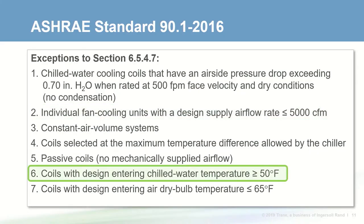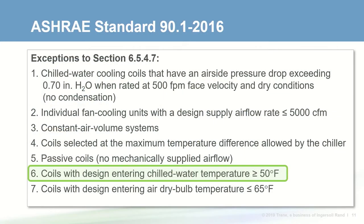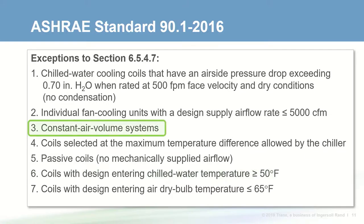Also, coils selected with an entering chilled water temperature of 50 degrees or warmer are exempt — this covers sensible-only cooling equipment like radiant panels, chilled beams, and sensible cooling terminal units like Trane's CoolSense. And if airflow across the coil is constant volume, the cooling coil is also exempt from this 15 degree delta T requirement.